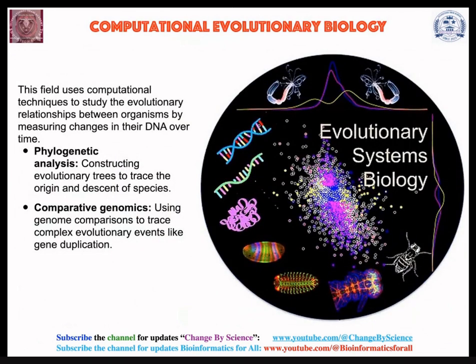Computational evolutionary biology focuses on establishing relationships between different organisms, predicting minute-level differences between them, or studying how cancer cells have evolved from normal cells. This field uses computational techniques to study evolutionary relationships by measuring changes in DNA over time. Phylogenetic analysis is one of the first steps, where evolutionary trees are constructed to trace the origin and descent of species.